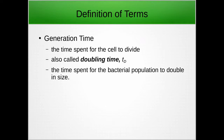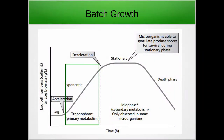Definition of terms first. We have generation time, which is the time spent for the cells to divide. Sometimes it's called the doubling time — Td, or sometimes they call it G — the time spent for the bacterial population to double in size.